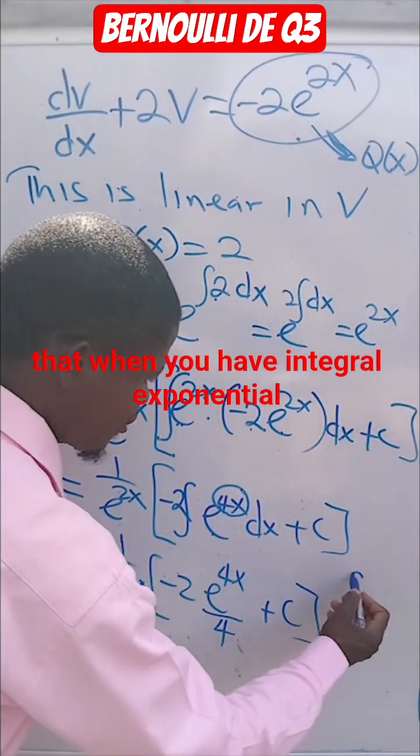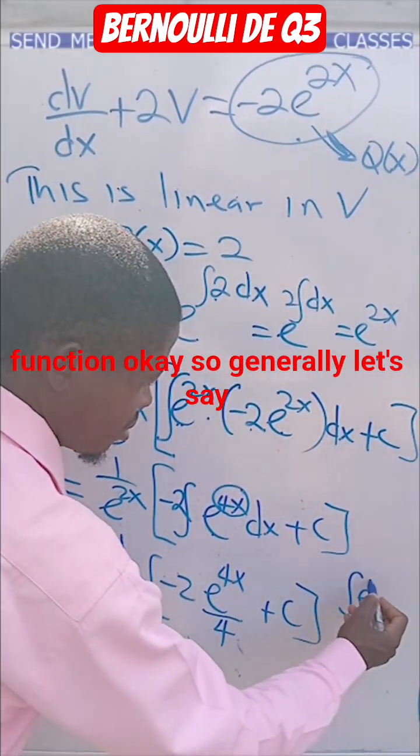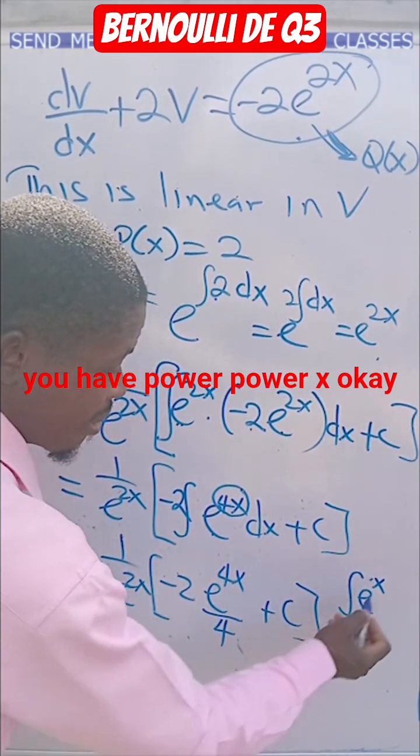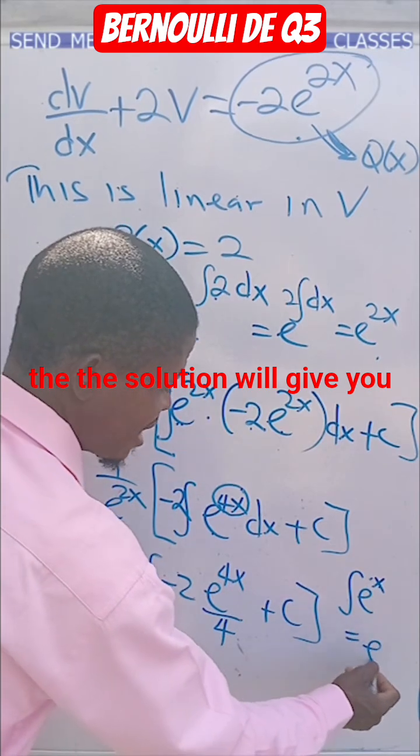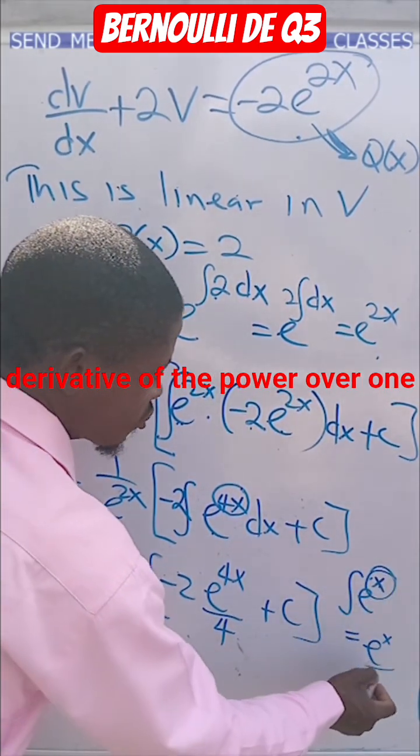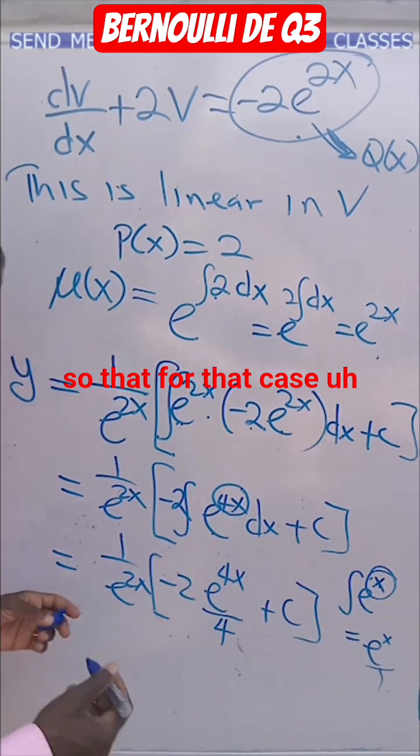So what I'm saying is that when you have integral exponential function, generally let's say you have e to power x, the solution will give you e^x, but you must divide by derivative of the power over 1. So that's for that case.